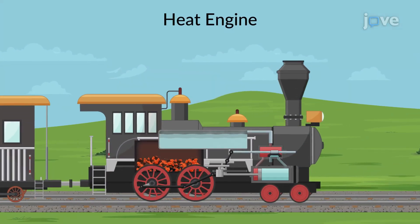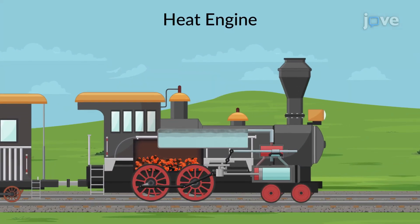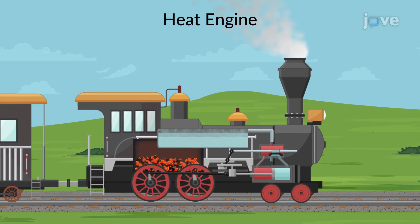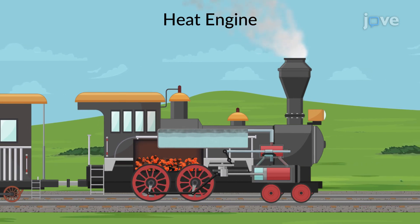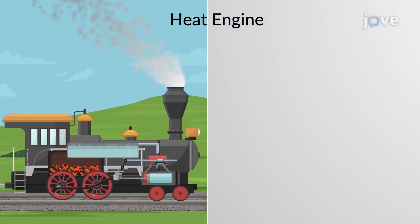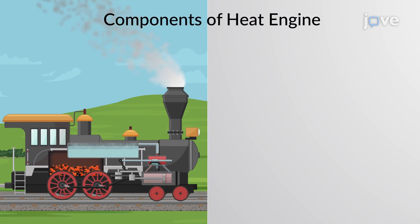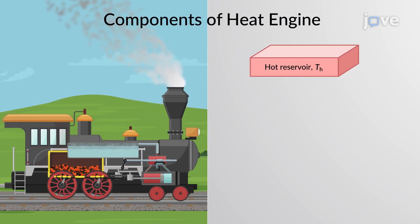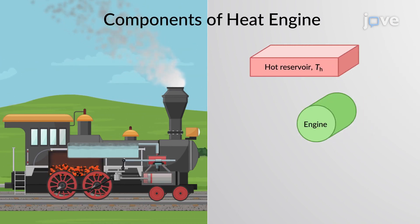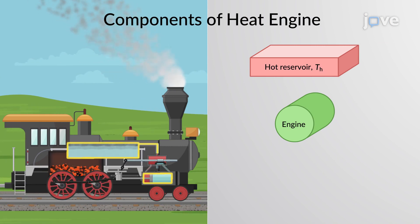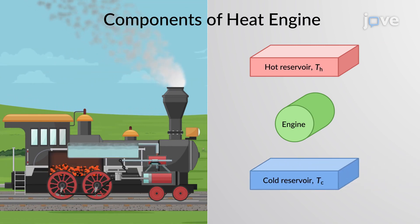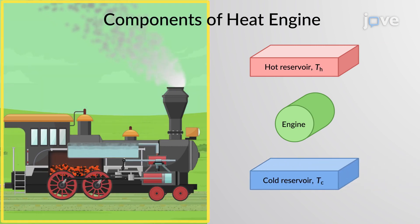A heat engine is a machine used to extract heat from a source and then convert it partly into work in the form of mechanical energy. The components of a heat engine are a hot reservoir acting as the source, a working substance for heat transfer during cyclic operation, and a cold reservoir acting as the sink.